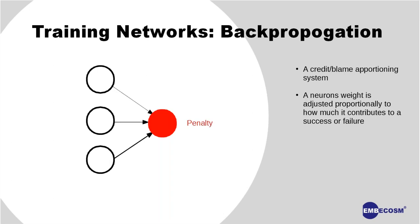In the case of an incorrect solution, I penalize the neuron that contributed most to the failure very heavily, and don't do so much to the others. By doing this many many times, back propagation forces the neural network to organize itself around what you want it to do. By increasing the weights of correct solutions, the network becomes more correct in the future, and by repeating this many times the network organizes itself toward the desired solution.